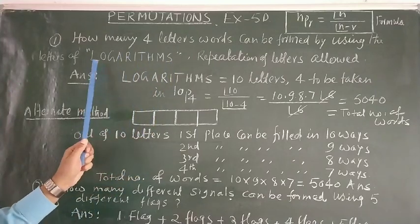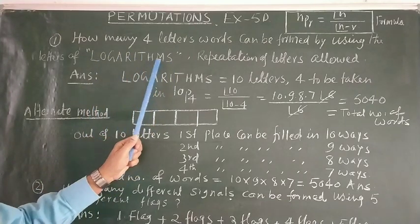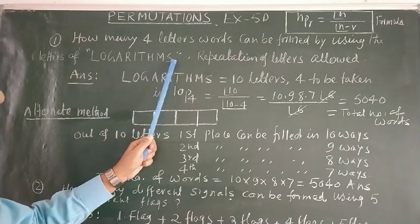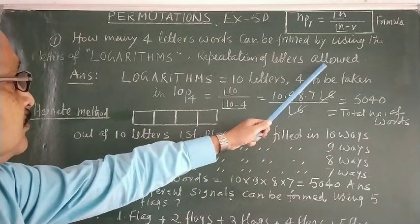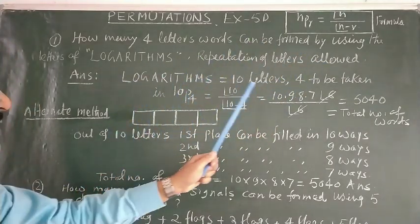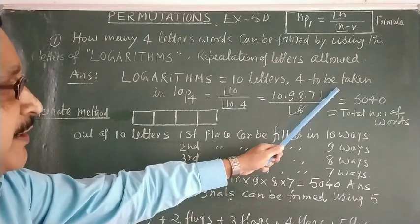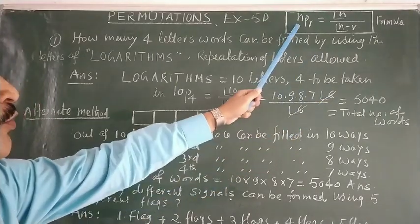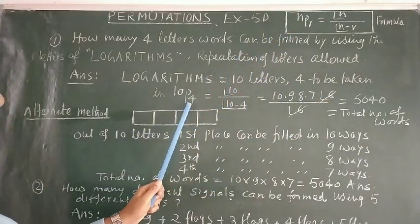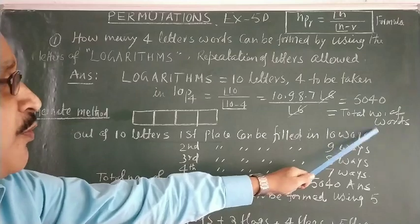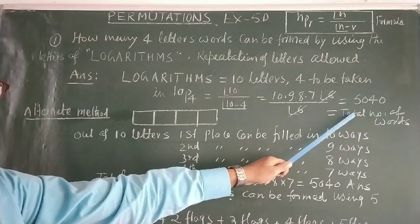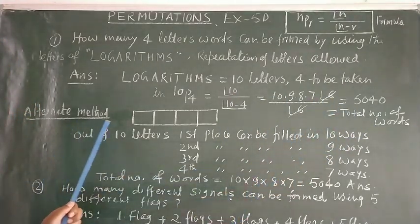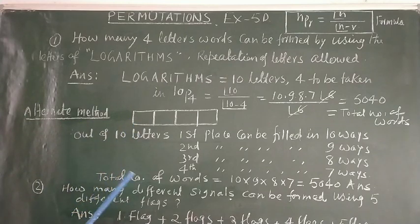Repetition of letters is allowed. LOGARITHM contains 10 letters and 4 are to be taken, so according to the formula, 10P4 is the total number of words. Simplify it to get the answer. There is also an alternate method.